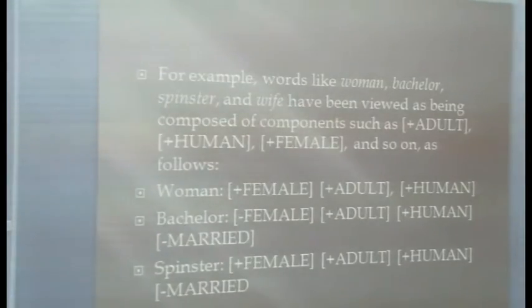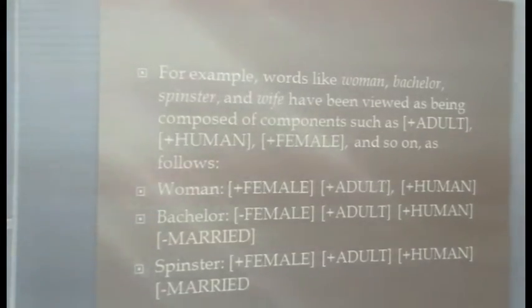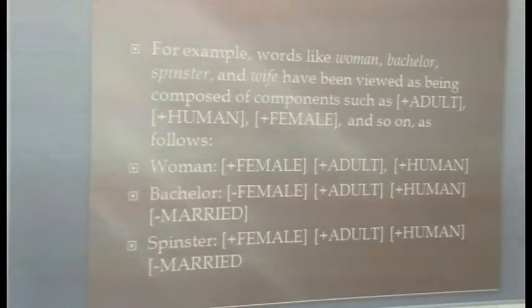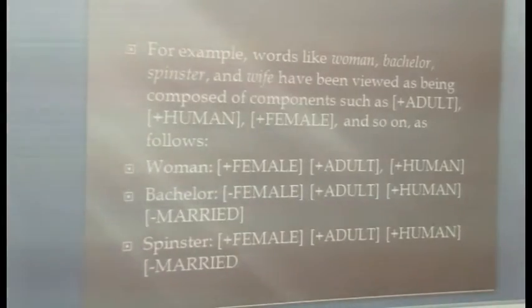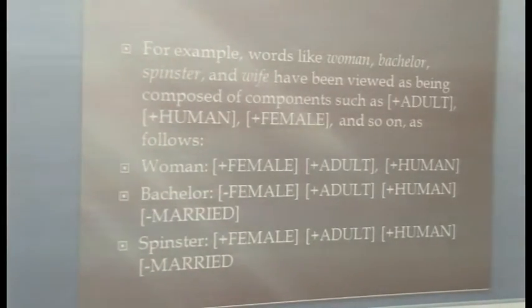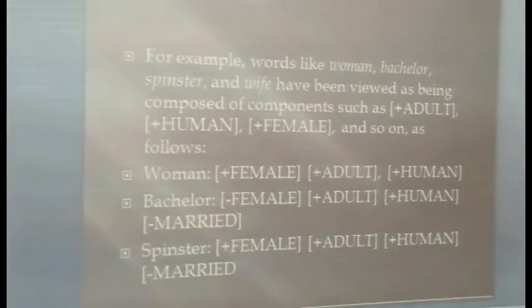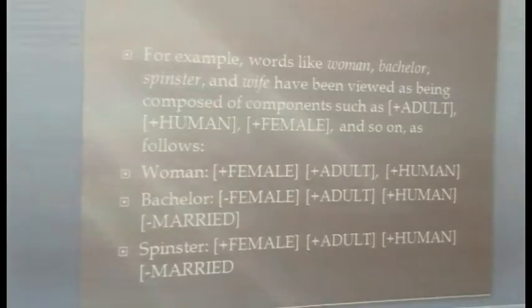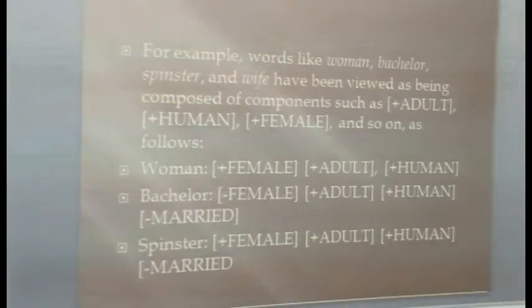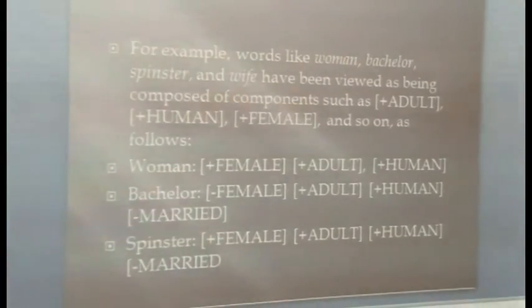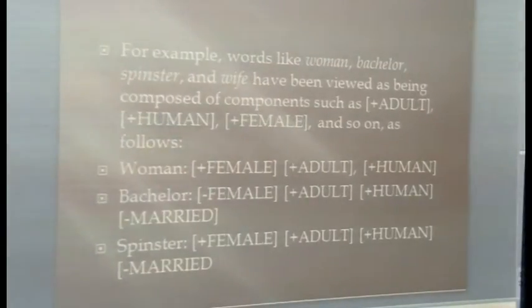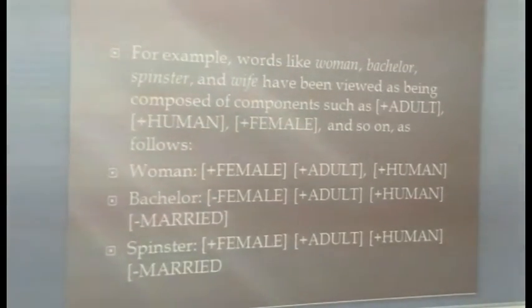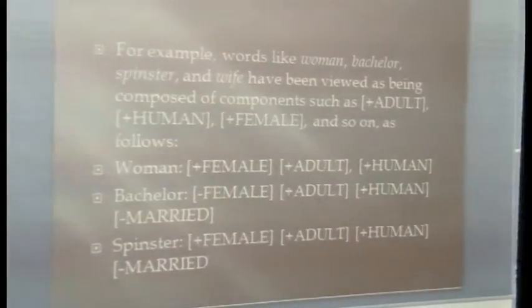We can use CA to define the meaning of words in English. Let's take the words woman, bachelor, spinster, and wife. We can do a CA meaning analysis of these words by using what are called semantic primes or primitives — what some scholars call semantic features or meaning components. In doing CA, all you have to do is impose the plus or minus signs on the meanings of words. For example, plus adult, plus human, plus female, and so on.